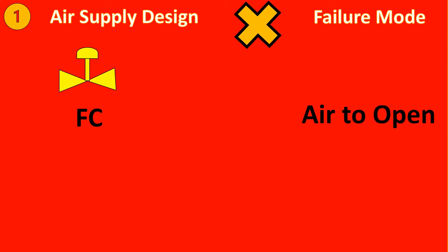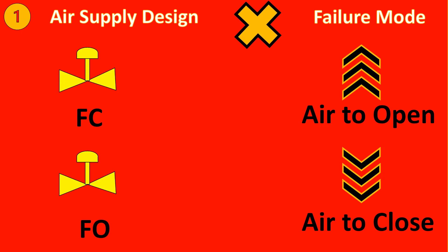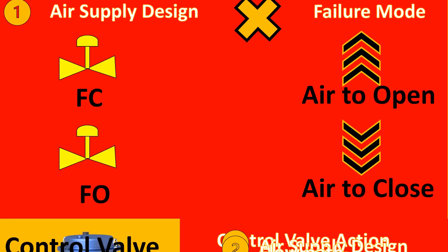Now let us look at interesting part which is that air supply design we can see as a thumb rule is basically opposite to the failure mode. So for a fail close valve your air supply has to be air to open. So in case of air failure it will go to close because of the spring. Similarly for fail open the air supply always has to be air to close. Remember this.